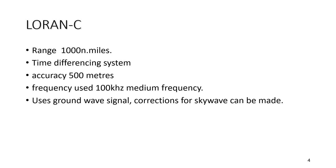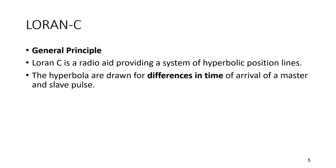The LORAN-C receiver recognizes the desired chain signal because it is repeated at this interval. Since the speed of transmission remains constant, the distance to the transmitting stations can be calculated from the time interval between transmission and reception. A simpler solution that does not require knowing the exact transmission time is to accurately measure the time difference between the arrival of signals from the master and slave stations, which can be converted to a range difference and a hyperbolic position line.